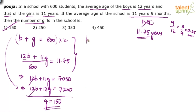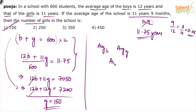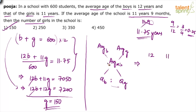The same question can also be solved using allegations — a smarter method. Take the average age of boys, average age of girls, and average age of the mixture. Cross differences give the ratio of boys to girls. Average age of boys is 12, average age of girls is 11, and average age of the mixture is 11.75. Taking cross differences: 11.75 − 11 = 0.75, and 12 − 11.75 = 0.25. So the ratio is 0.75 : 0.25, which simplifies to 3 : 1. This ratio represents boys to girls.